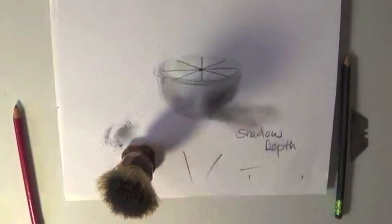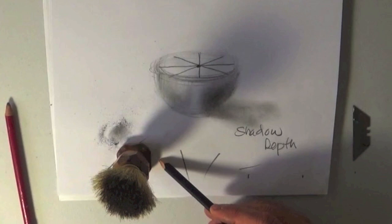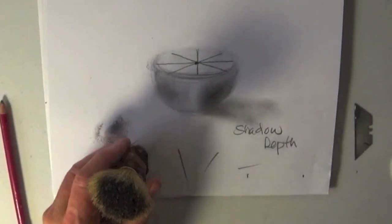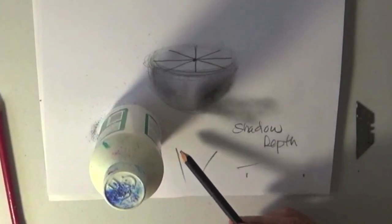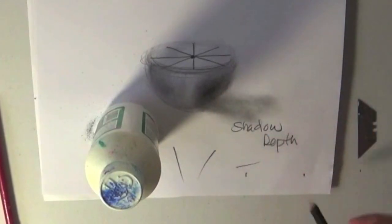You'll see that the shadow is definitely darkest here, but then it softens out. Even though this is kind of soft, I can even take something that's a little harder edged. Very dark here, and then it gradually lightens out.